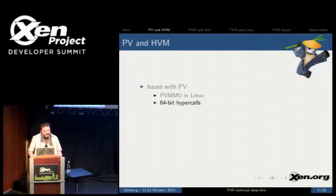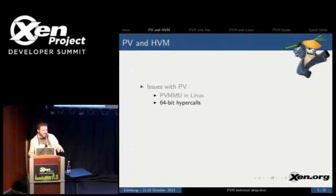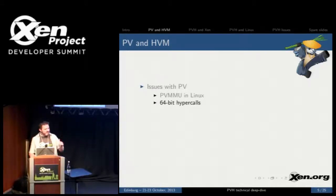When Xen was being developed for 32-bit operating systems, there was a user and supervisor mode which could easily be used to separate the guest user from the guest kernel. We still needed something to protect the hypervisor from the guest kernel, and we had this thing called a segmentation limit which basically no one else was using, so we kind of commandeered that to help protect the hypervisor from the guest kernel.